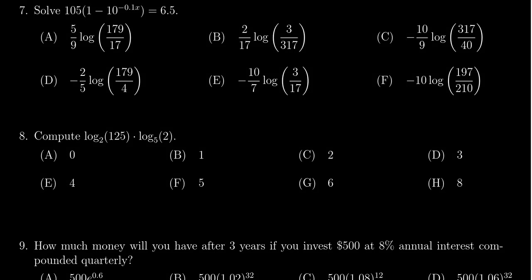In this video, we provide the solution to question number 7 for practice exam 4 for math 1050, in which case we have to solve the exponential equation 105 times 1 minus 10 raised to the negative 0.1x power, and that's all equal to 6.5.